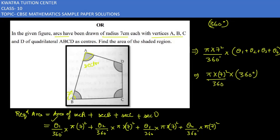Now 360 in the denominator and 360 in the numerator cancel. Pi value is 22 by 7, and this is 7 squared. 7 cancels with 7, leaving us with 22 times 7, which equals 154 cm squared.